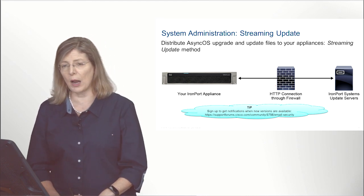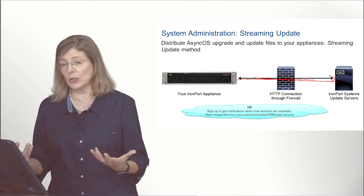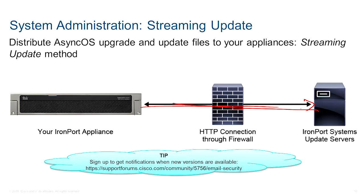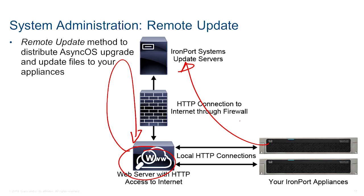When upgrading your box, it will talk directly to the Cisco update server to get the latest updates. You can also subscribe to receive email notifications from Cisco when a new operating system or update comes out for your ESA box. However, if your organization does not permit the ESA to access the internet directly, you can stage the updates locally inside your network and have your ESA pull updates from there.